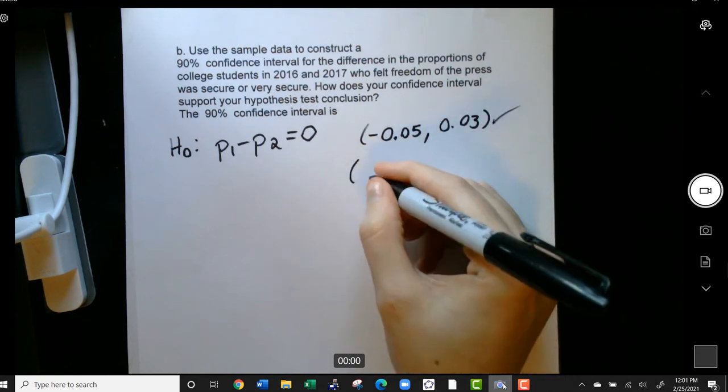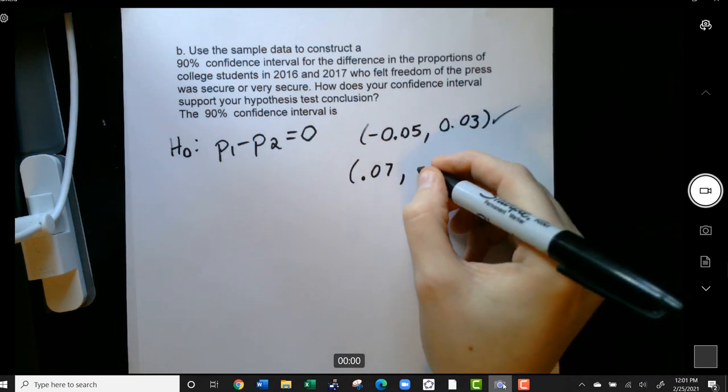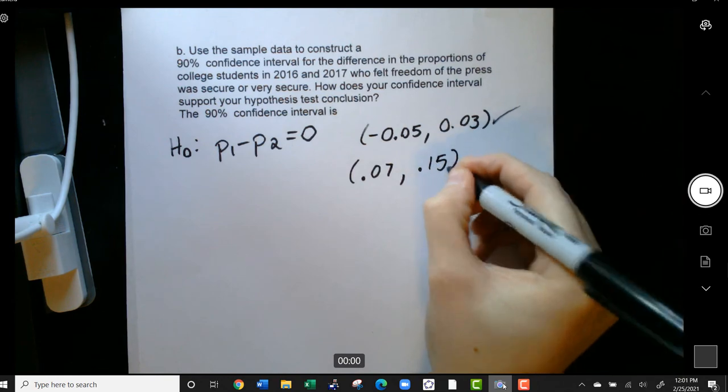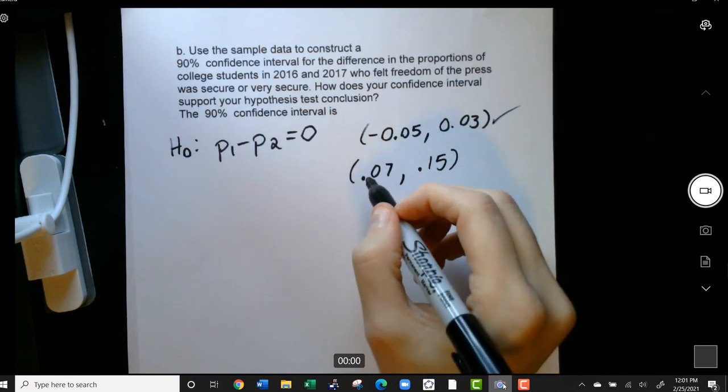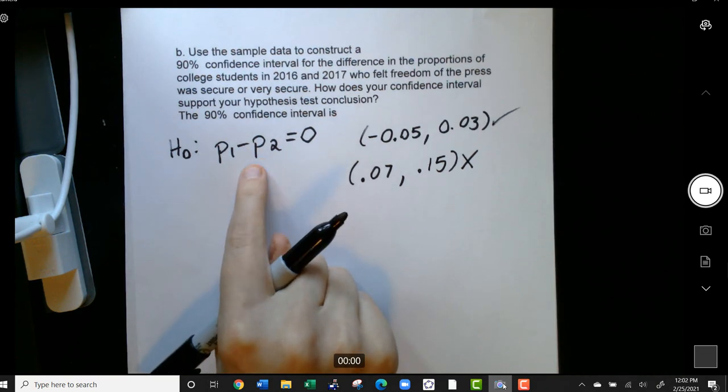However, if our confidence interval was, say, between 0.07 and 0.15, well, zero is not in between those two numbers. So it's probably not supporting our null hypothesis.